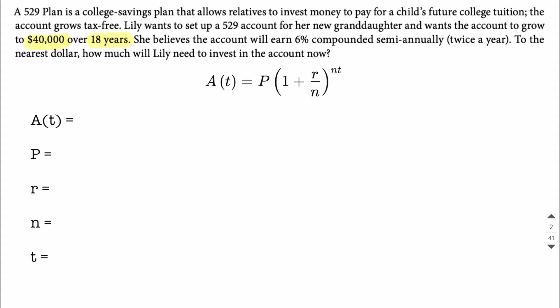She believes that this account is going to earn 6% interest compounded semi-annually, so that means twice a year. And we want to figure out today what does she need to invest in order for it to grow to this $40,000, 18 years from now under these conditions.